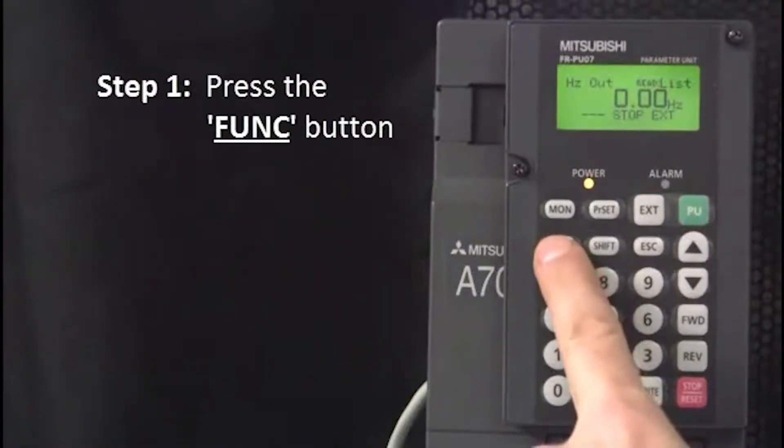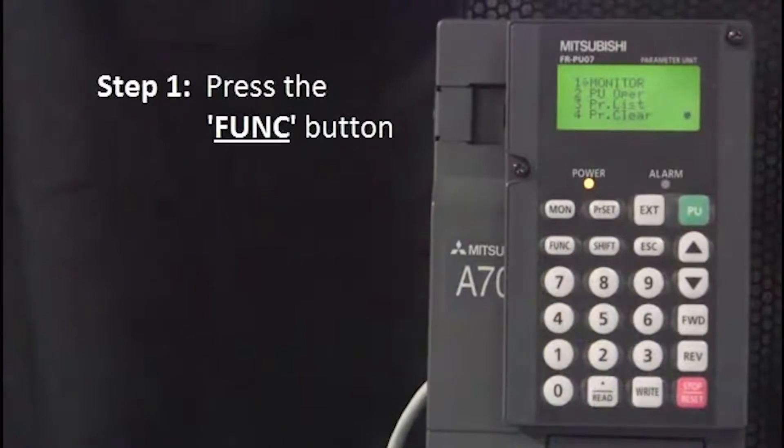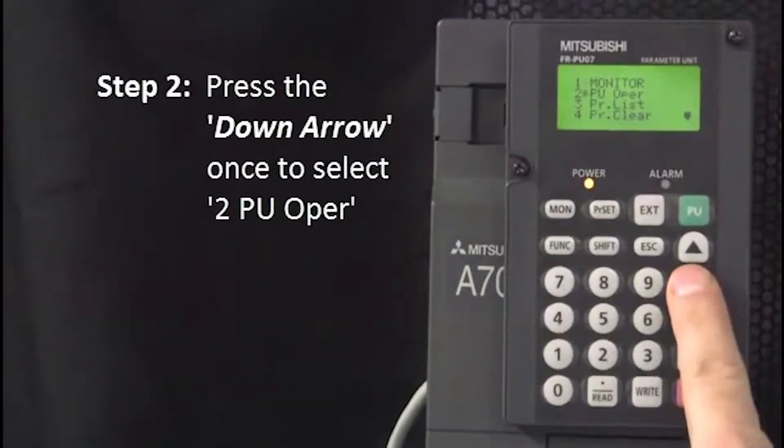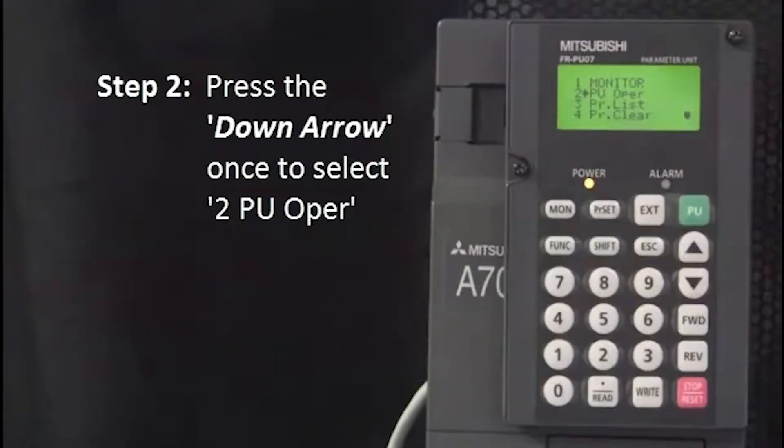The first step is to press the function button, FUNC. Next, press the down arrow once to select 2PU operation.